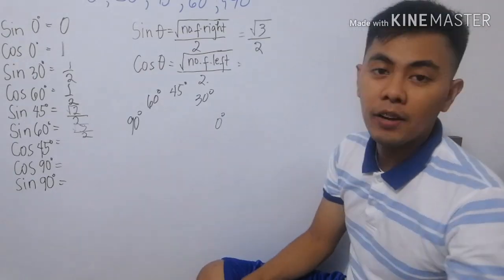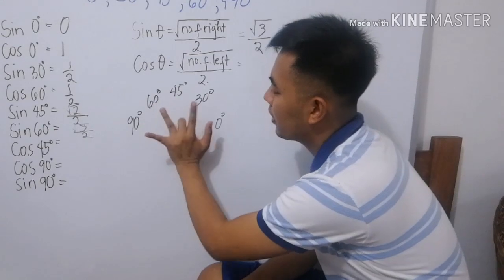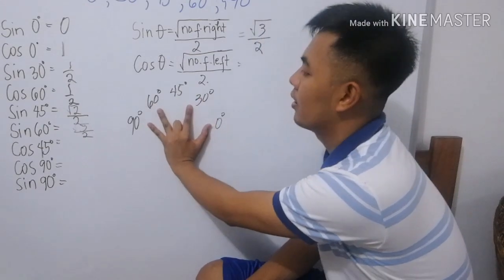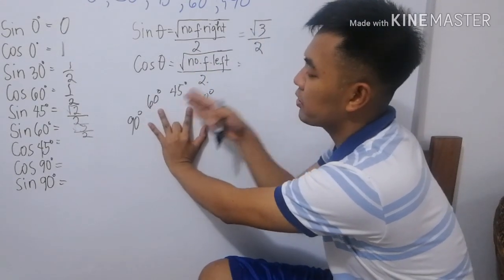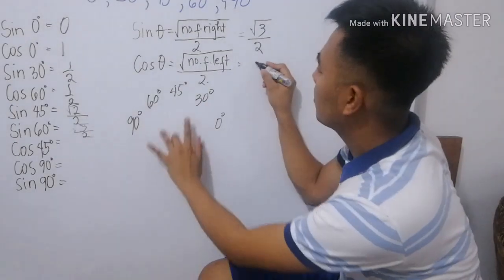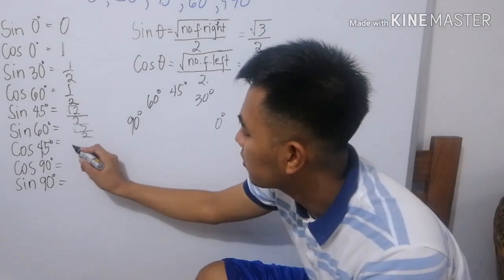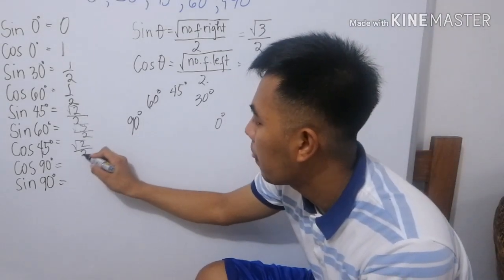Next. Cosine 45 degrees. So, 45. 45 tupiin natin. Cosine. Number of fingers to the left. So, yung kaliwa naman. So, dalawa. So, square root of 2 over 2. Okay. So, ito ang square root of 2 over 2.